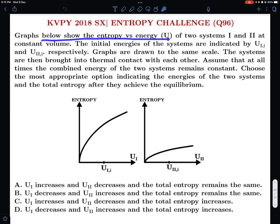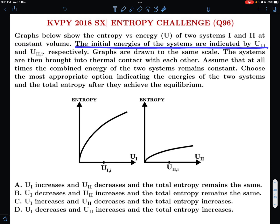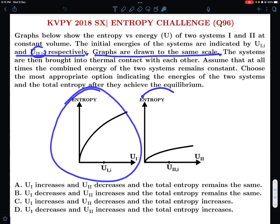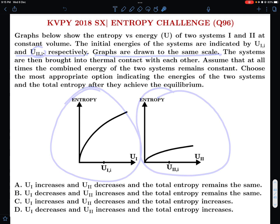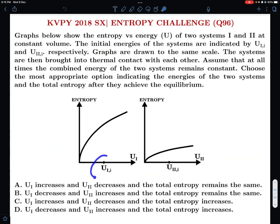Let me read out the question formally. The graphs below show the entropy versus energy of two systems 1 and 2 at constant volume. The initial energies of the systems are indicated by U1i and U2i respectively. Graphs are drawn to the same scale. You can clearly see that U1i is exactly equal to U2i if you consider the graphs to scale.